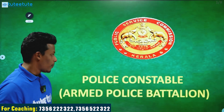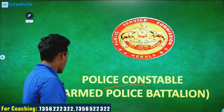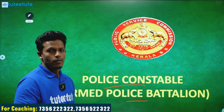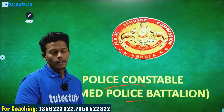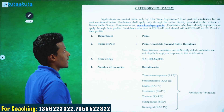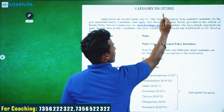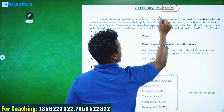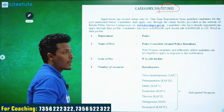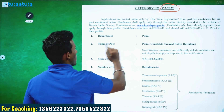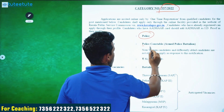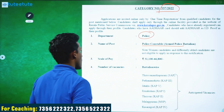This is the Police Constable post. We will discuss the details in this video. This is the category number. The name of the post is Police Constable, Armed Police Battalion.